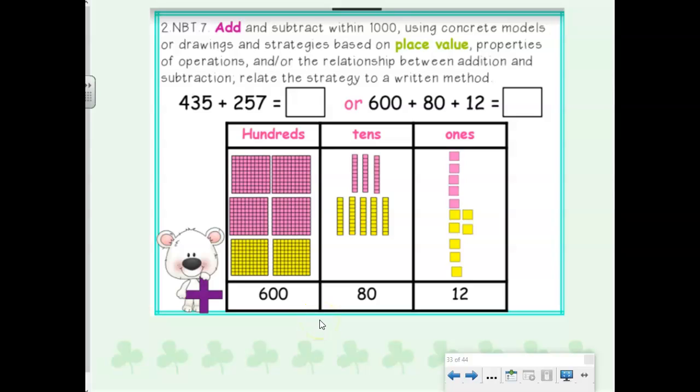Okay guys, let's continue to learn about adding three-digit numbers today with regrouping. So our standard says we can add and subtract within 1,000. We can use concrete models, drawings, strategies based on place value, and eventually when we are able to, we can relate the strategy to a written method.